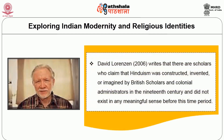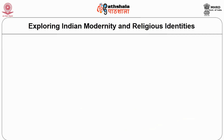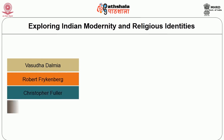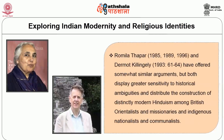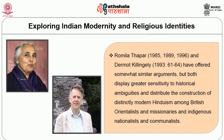Lorenzen writes that there are scholars who claim that Hinduism was constructed, invented, or imagined by British scholars and colonial administrators in the 19th century and did not exist in any meaningful sense before this time. Those who claim this constructionist argument include Vasudha Dalmiya, Robert Frikenberg, Christopher Fuller, John Hawley, Gerard Larson, Harjot Oberoi, Brian Smith, and Heinrich von Streiton-Kron. W.C. Smith is considered an important precursor to these scholars. Romila Thapar and Dermot Killingly offered somewhat similar arguments but display greater sensitivity to historical ambiguities, distributing the construction of a distinctly modern Hinduism among British orientalists, missionaries, and indigenous nationalists and communalists.